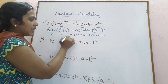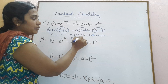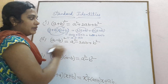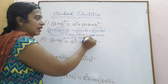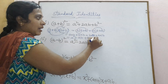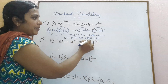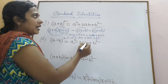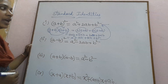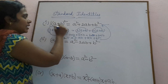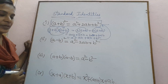A into a is a squared, plus a into b is ab, plus b into a is ba — which is the same as ab — plus b squared. So ab plus ab, or ab plus ba, gives us a squared plus 2ab plus b squared. This is the first identity in algebraic expressions.